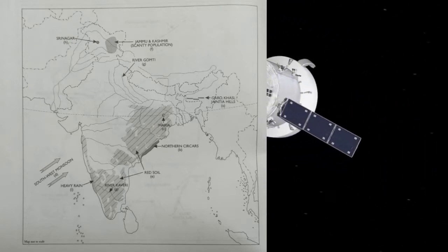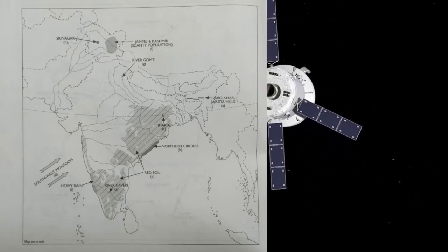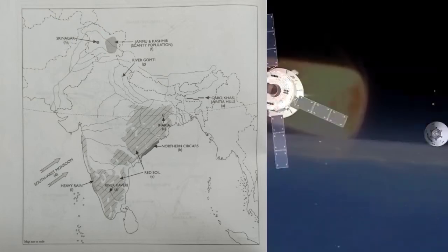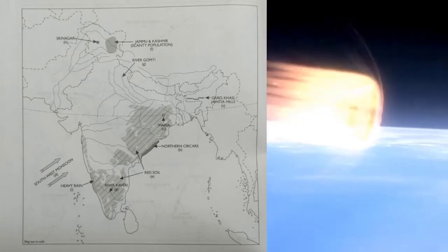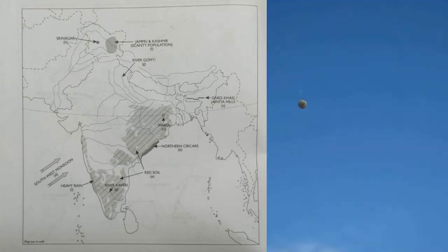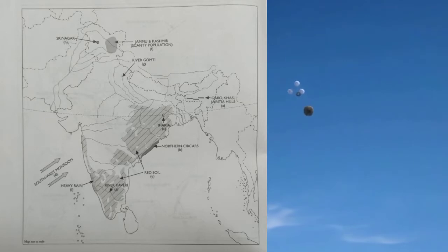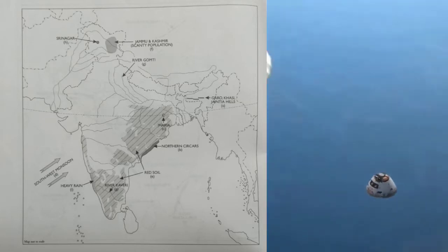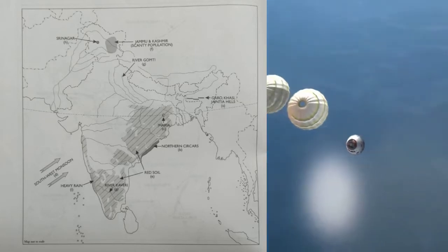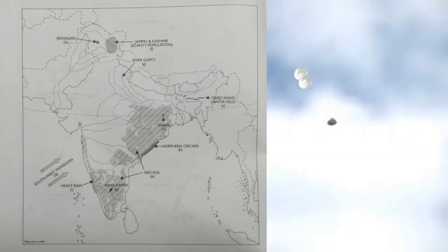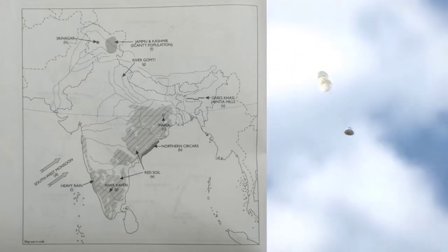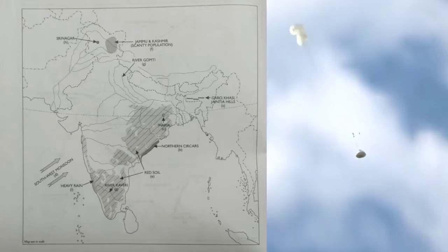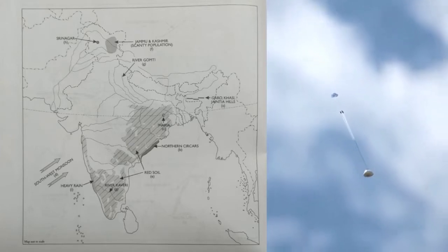Mark an area of sparse population in the northern half of India — 'F' — and name the area. Trace the course of river Kaveri and river Gomti — 'G' traces the course of river Kaveri.